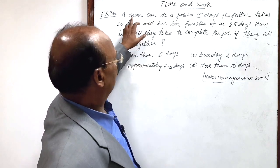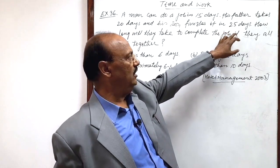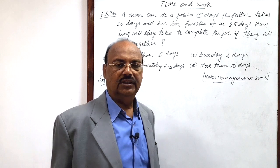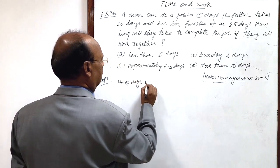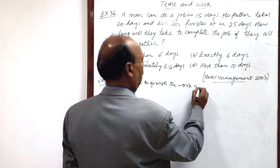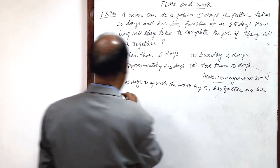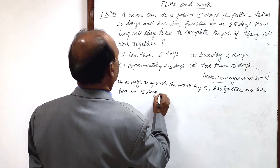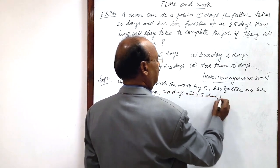Man finishes in 15 days, his father finishes in 20 days and son finishes the same work in 25 days. Amount of work done is reciprocal of number of days. Therefore, number of days to finish the work by A, his father and his son is respectively 15 days, 20 days and 25 days.